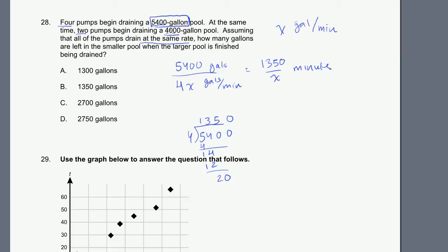Now, how much has drained out of the 4,000 gallon pool at that point? We're going to be draining 2x gallons per minute. How long are we going to be doing that for? We're going to do it until this pool is completely drained, which takes 1,350 over x minutes. So 2x gallons per minute times 1,350 over x minutes tells us how many gallons have pumped out.